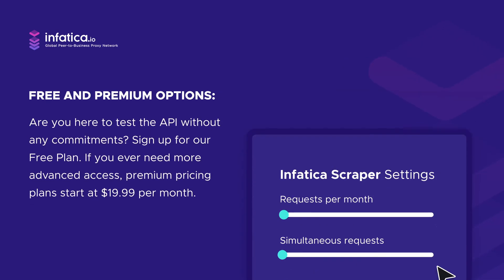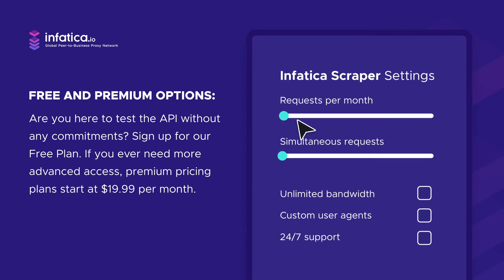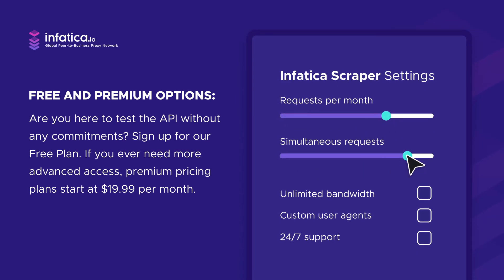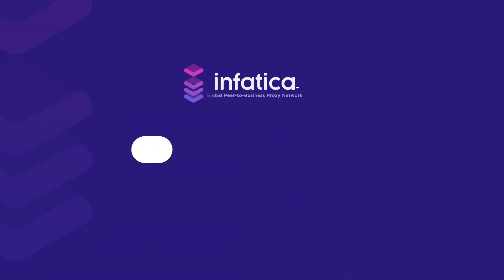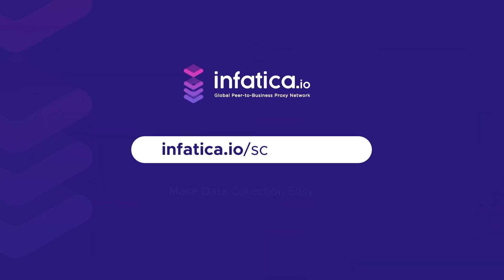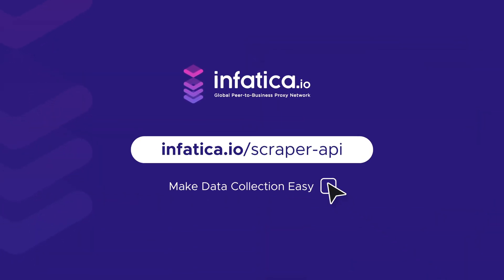Free and premium options. Are you here to test the API without any commitments? Sign up for our free plan. If you ever need more advanced access, premium pricing plans start at $19.99 per month. Visit emphatica.io/scraper-api to try Scraper today.